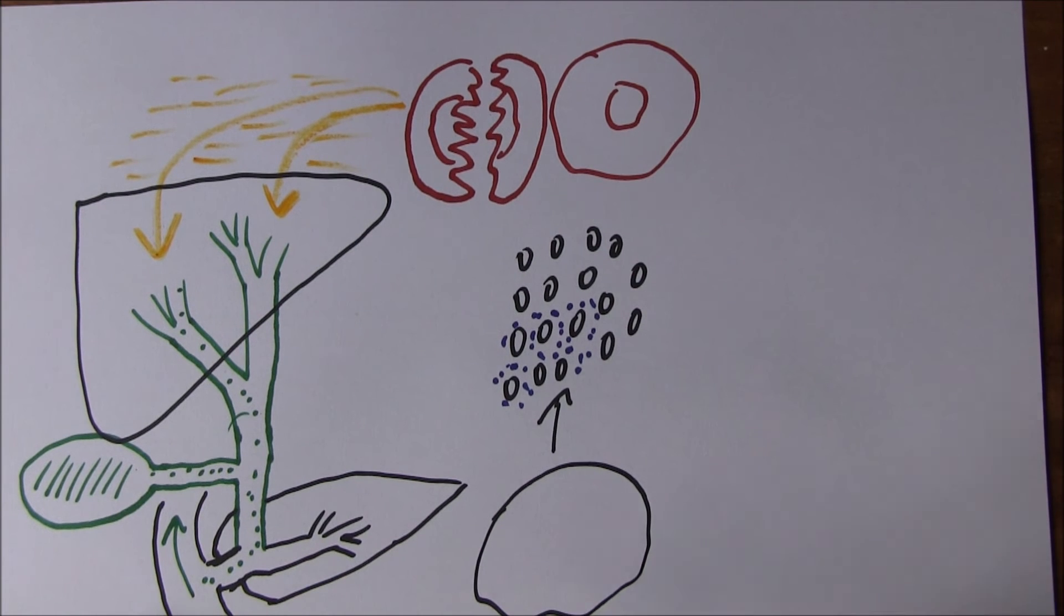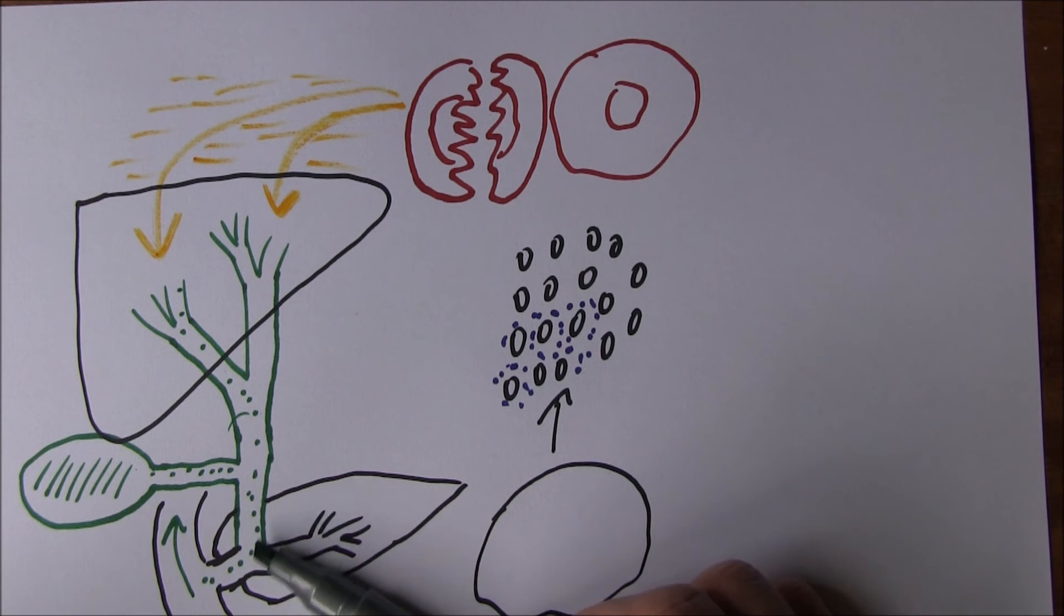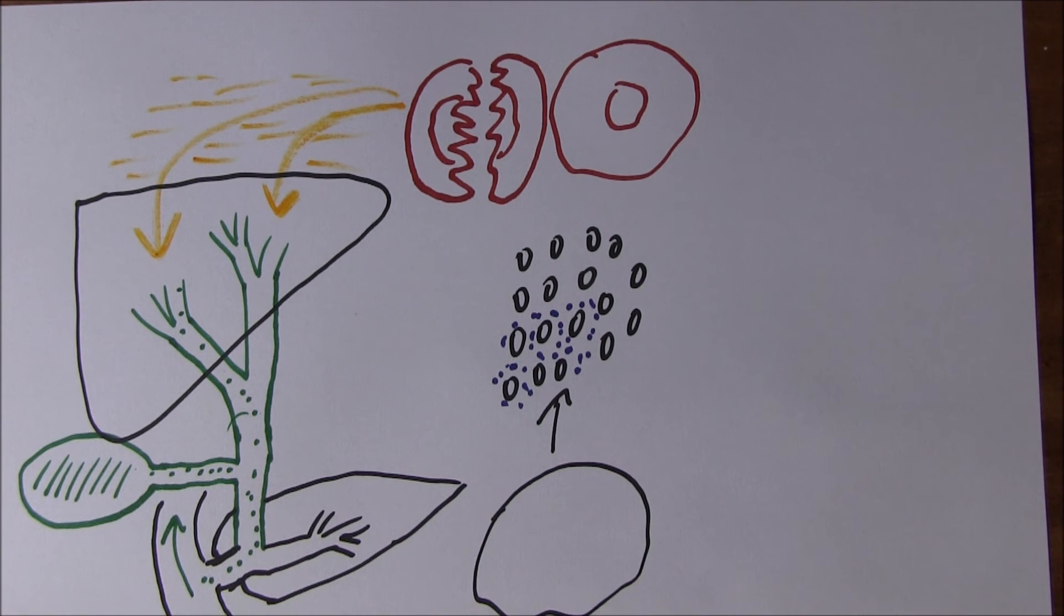As well as being useful to emulsify fats, the bile is also going to color and deodorize feces. In a case of obstructive jaundice, if the bile is not getting through, then that which colors the feces is not getting through either, and we can also get very pale colored stools in that condition.